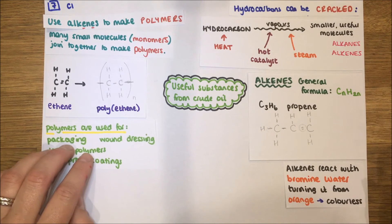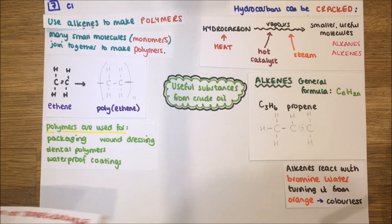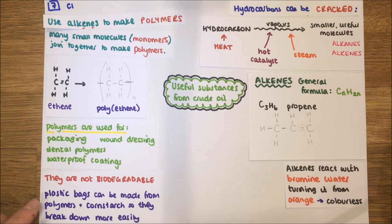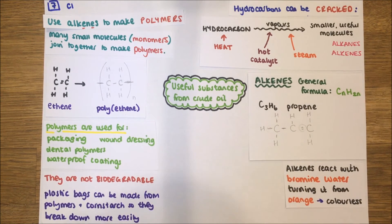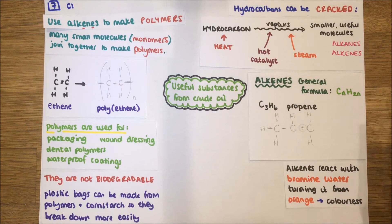Polymers have many uses: for example packaging, wound dressings, dental polymers, and waterproof coatings. However, there is a negative — many polymers are not biodegradable, meaning they do not break down naturally. We throw them away and they fill up landfill sites. Hence we now have a 5p charge for plastic bags to try to reduce use. What we can do is add cornstarch to make them break down more easily. Bags using cornstarch can be completely biodegradable, which is a big advancement.